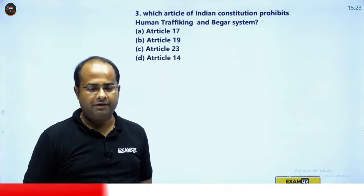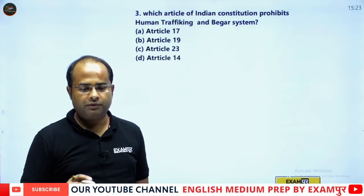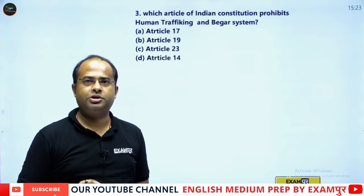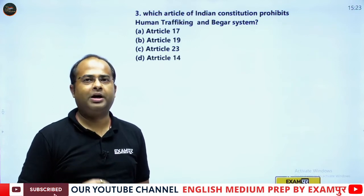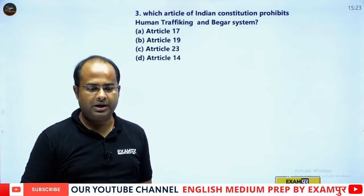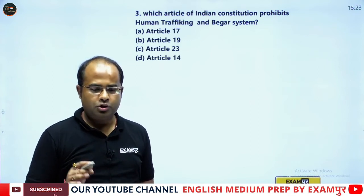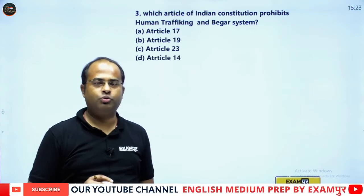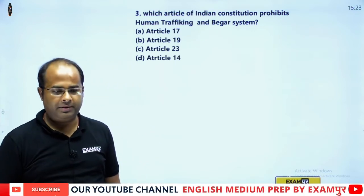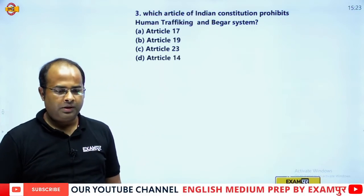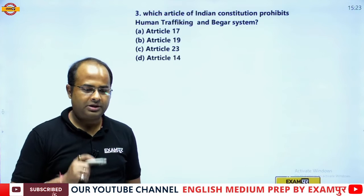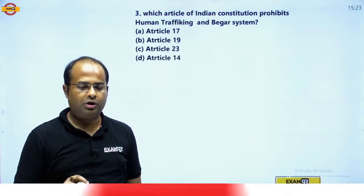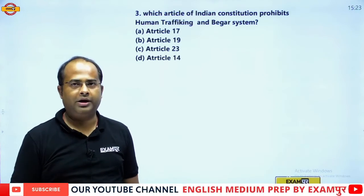The next question: which of the following articles of the Constitution prohibits human trafficking and the Beghar system? Is it Article 17, Article 19, Article 23, or Article 14?